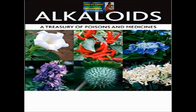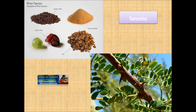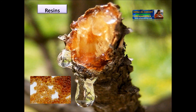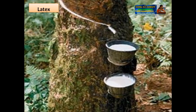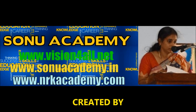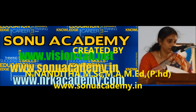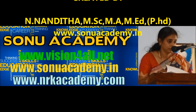Points to be remembered: Alkaloids are nitrogenous compounds and they are poisonous. Tannins are carbon compounds. Resins are secretory substances formed in resin passages, found mainly in gymnosperms. Latex is a milky white or yellow liquid present in latex cells or passages in plants. Thank you. This is Nanduram and we are from Sonu Academy.